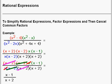In this video, we're going to look at operations with rational expressions. First we're going to look at simplifying rational expressions. In the example below, we have the rational expression x squared minus 4 times x squared minus x over x squared minus 2x times x squared plus 4x plus 4.